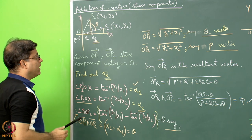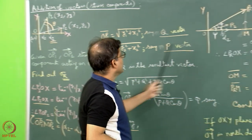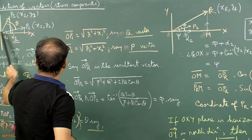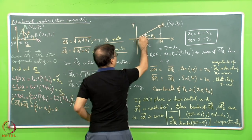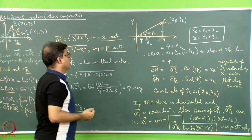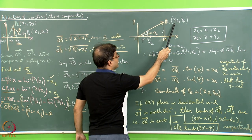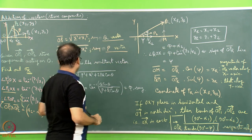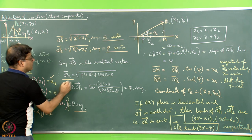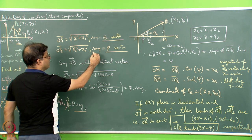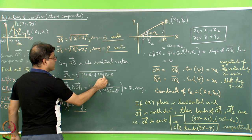Assume that OPr is the resultant vector. From the drawing, OP2 is taken here and the resultant OPr is drawn as a stress, with Pr having a coordinate (xr, yr). For the length OPr we can apply the formula — since this is p and that is q — giving the square root of p squared plus q squared plus 2pq cos theta.